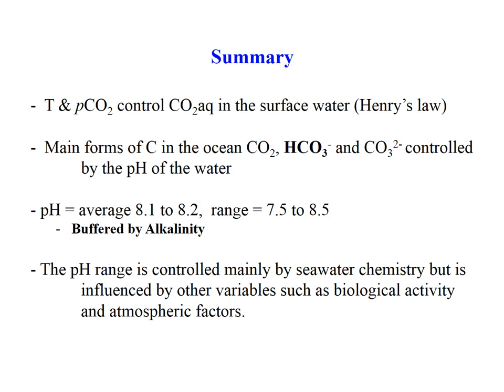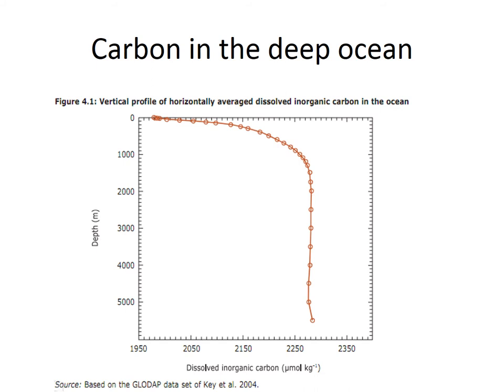To summarise: temperature and atmospheric concentration determine how much carbon can go into the ocean, but only CO2 interacts with the atmosphere. You can store much more carbon in the ocean because it's held in different chemical species, and the proportions are dependent on pH, buffered by alkalinity. If we measure dissolved inorganic carbon down into the ocean, the surface values are lower than in the deep ocean — about a 15% increase at depth.